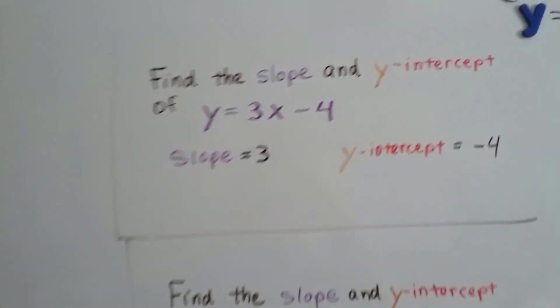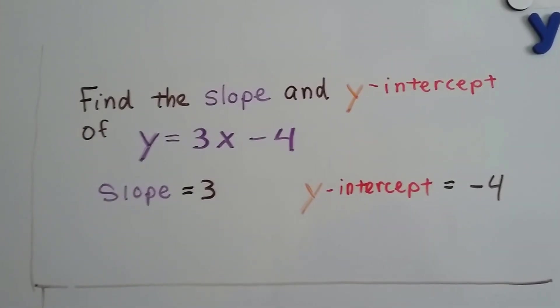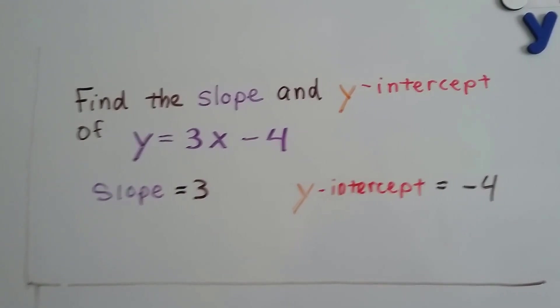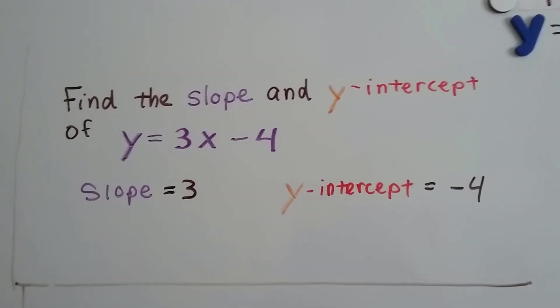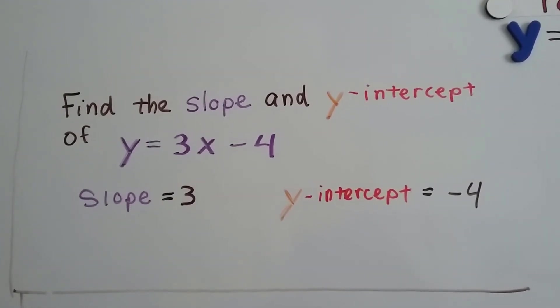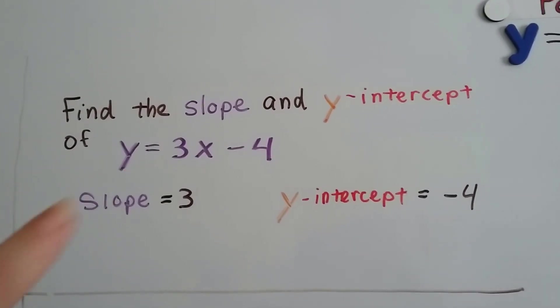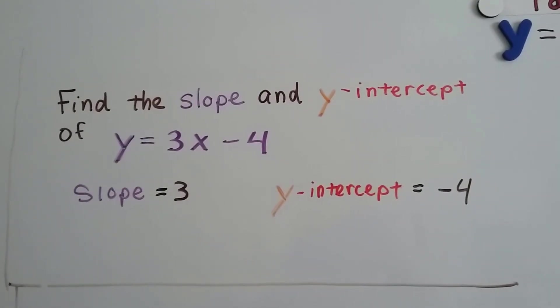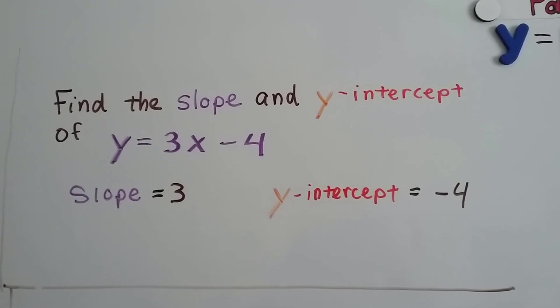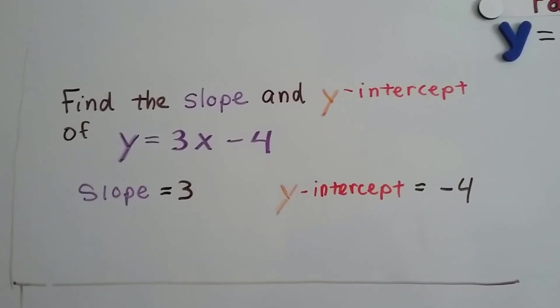So what if we see a problem and it says, find the slope and y-intercept of y equals 3x minus 4. Well, we can just look at it and tell you. The slope is 3, that's the coefficient for x. And where does the line hit the y-axis, the y-intercept? Negative 4. You can just look at it and tell.